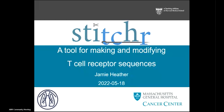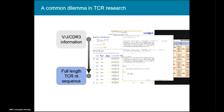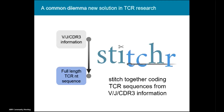In TCR research, we often have a bit of a dilemma in that we require a full-length coding nucleotide sequence, but we have some more abstract representation. We want to put genes in cells and test things functionally, but we have a list of VJ genes and CDR3 sequences. The traditional way to go between these two things is kind of slow and arduous and involves looking up gene tables and codon tables and stitching together by hand, which works, but it's not repeatable, not reproducible, and doesn't scale well. That's where Stitcher comes in.